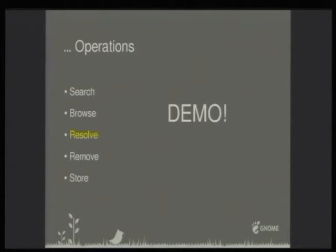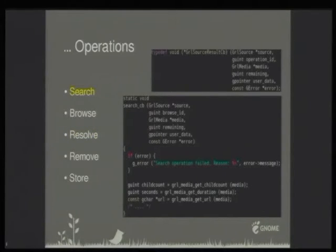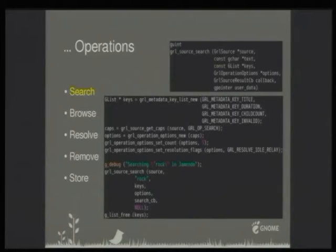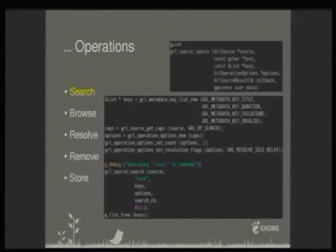I won't go into browse, remove, and store as they are really similar. For browse you call grillo_source_browse with some content — in the Jamendo example you pass 'null' to return top-level elements, then you can go by artist at the second level and so on. For remove and store it's the same: you pass the GrlMedia and the source, and specify what you want to store or remove.